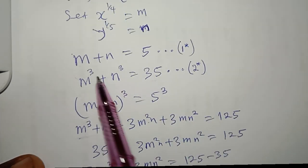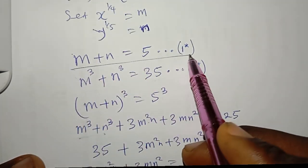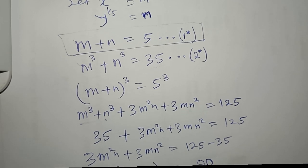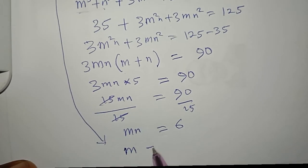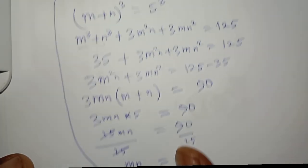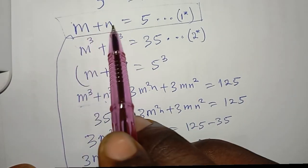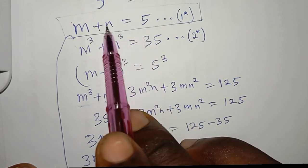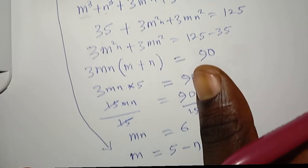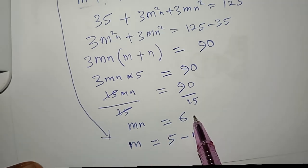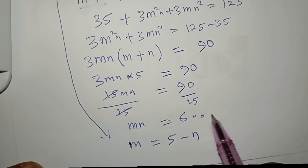Now I can make m the subject from equation 1-star: m = 5 − n. I'll call the equation mn = 6 equation 3-star, and I'll substitute m = 5 − n into it.